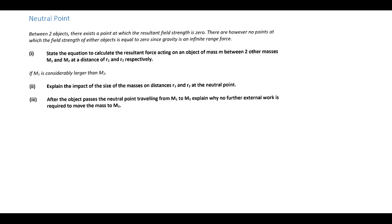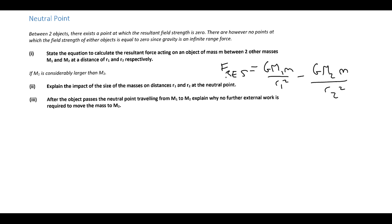Next we look at neutral points. Between any two bodies, there is a point where the two field strengths cancel each other out, giving a point where there is actually no net force — that's called the neutral point. If an object is between two planets, the forces act in opposite directions, so the resultant force is the subtraction of the two: F = GMm/r₁² − GMm/r₂².